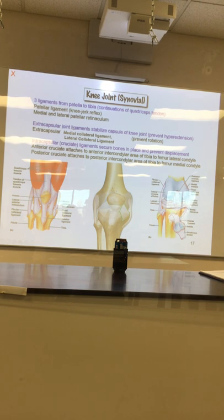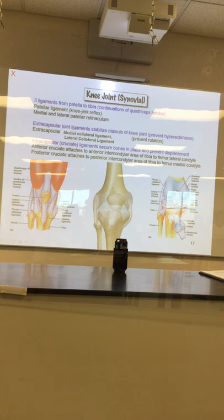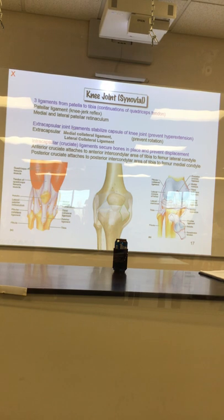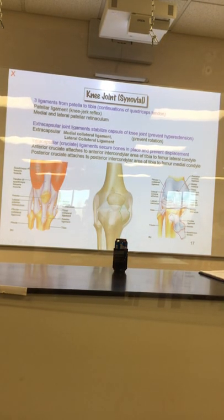Lateral meniscus, medial meniscus — what is the meniscus made of? What kind of cartilage? Hyaline cartilage lines the ends of the bones, but fibrocartilage is what makes up the meniscus. The menisci are these little cups where the condyles of the femur sit on top of the tibia. You don't have to have them, but they help.